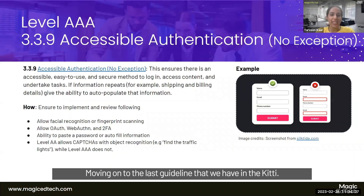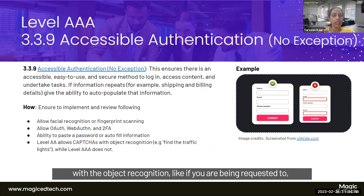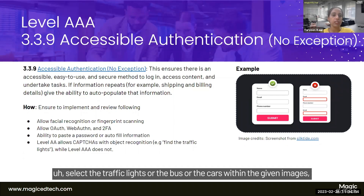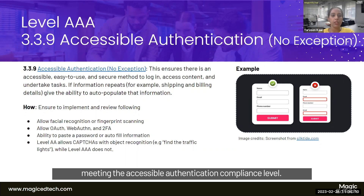The final guideline is Triple A 3.3.9 Accessible Authentication, the enhanced version of 3.3.8. In 3.3.8, an exception allowed CAPTCHA with object recognition — selecting traffic lights, buses, or cars within images. At Triple A, this exception is removed. CAPTCHA cannot be considered an accessible version for meeting Accessible Authentication compliance.